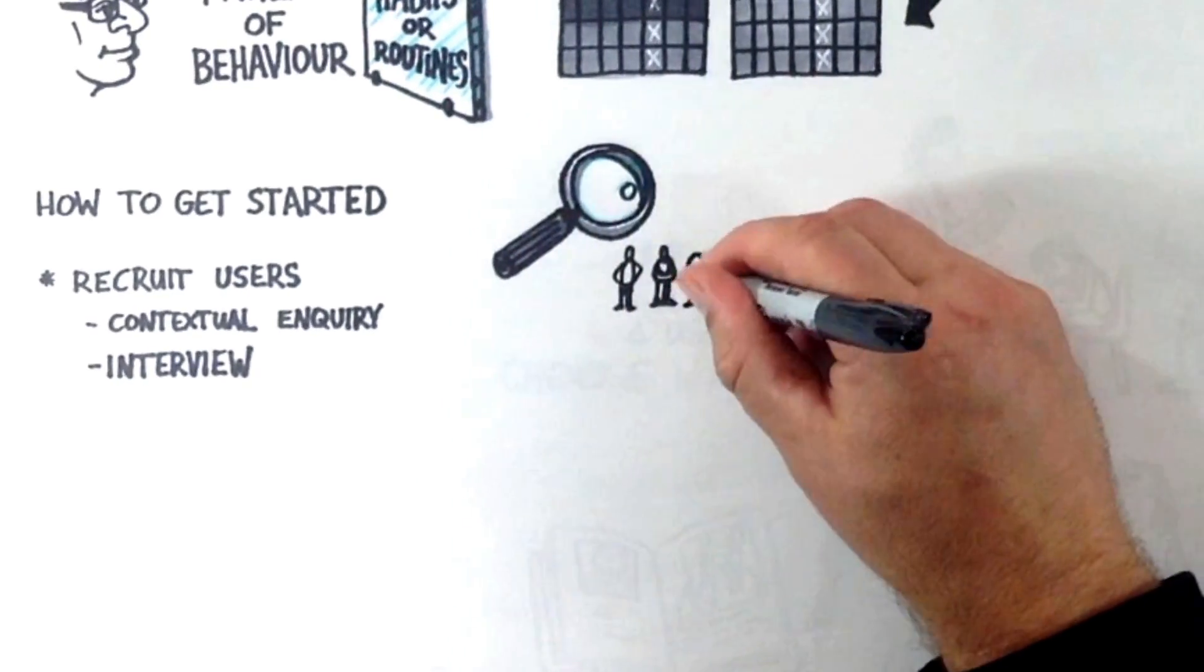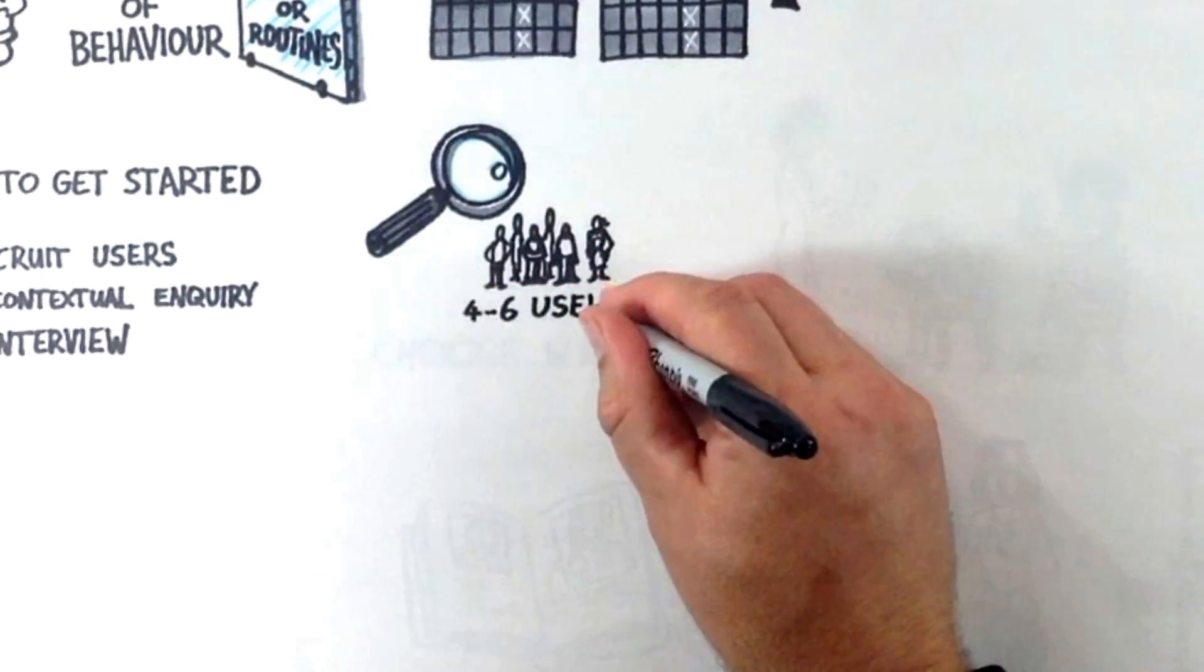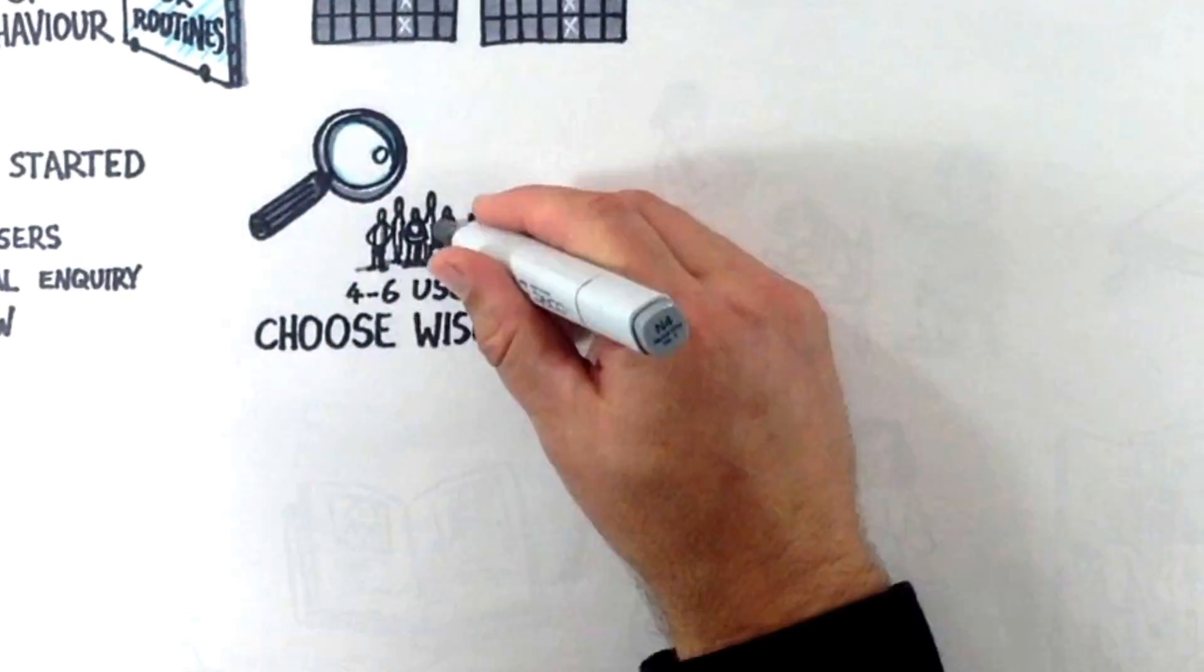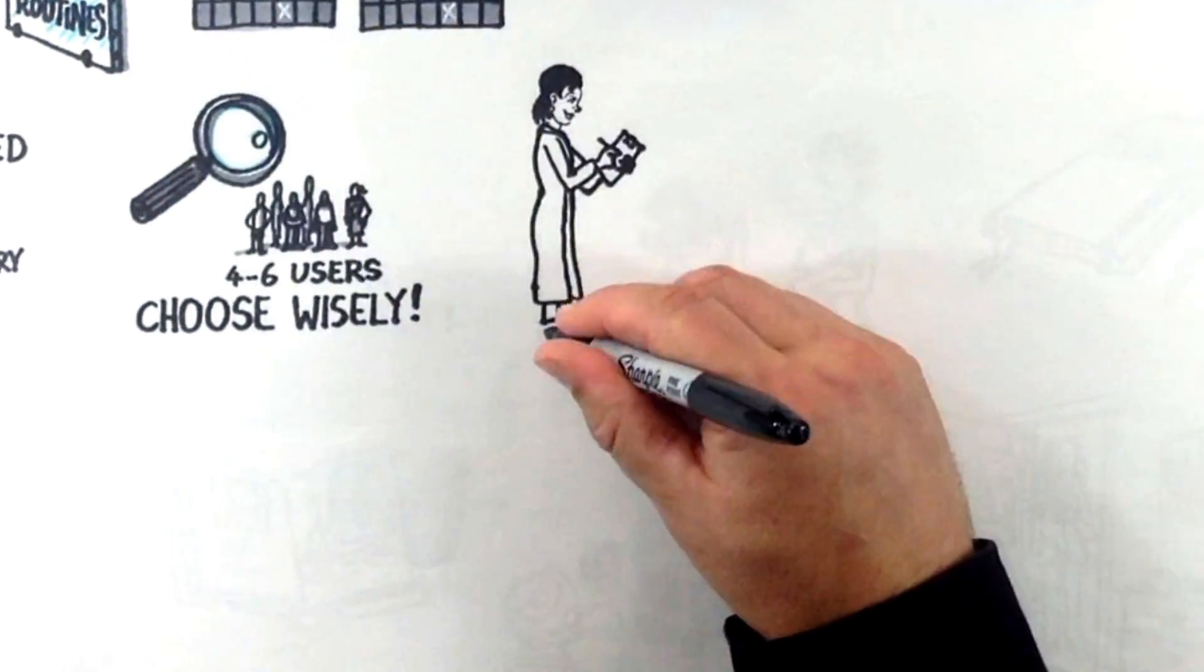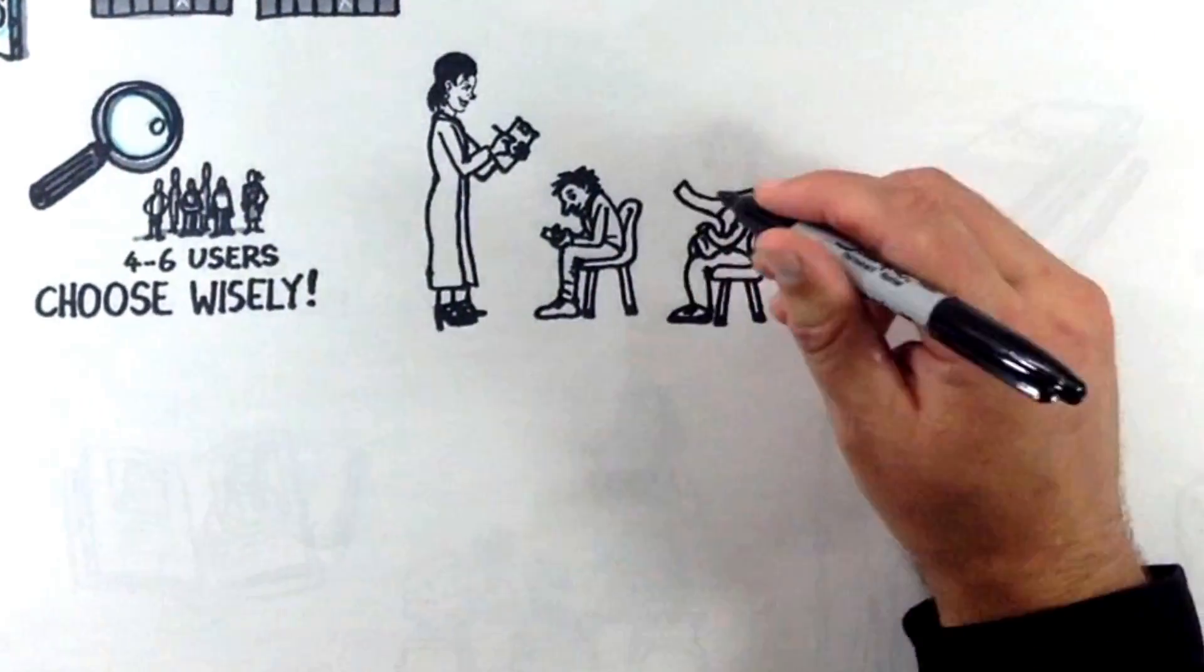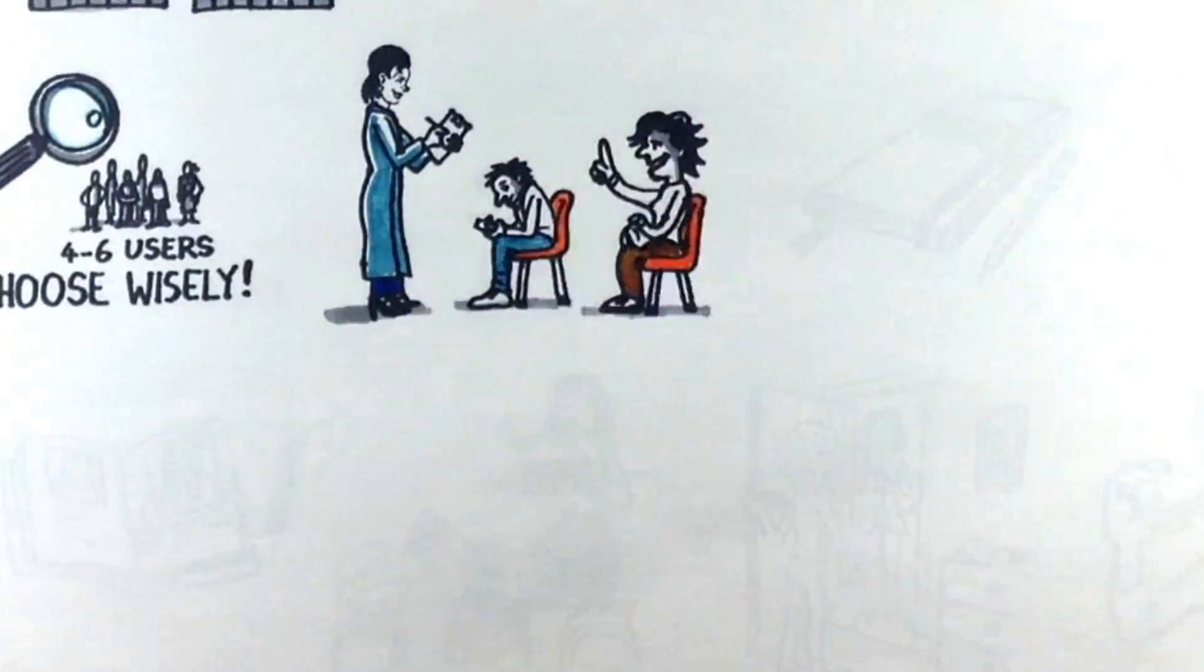There is no need to over-bake it, you probably only need between four to six users, but make sure you choose wisely. You really do want those engaged and talkative people, not the ones that were hard to extract information from.